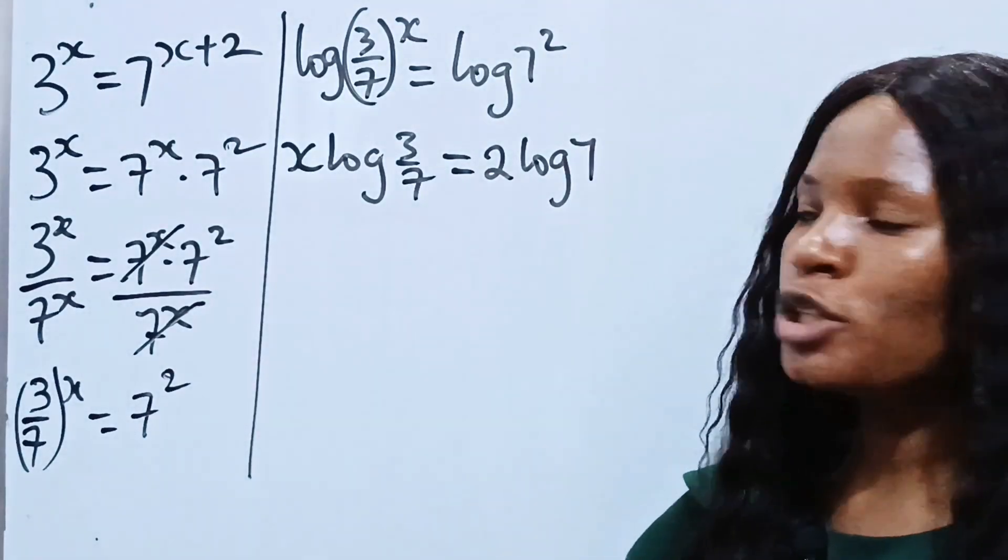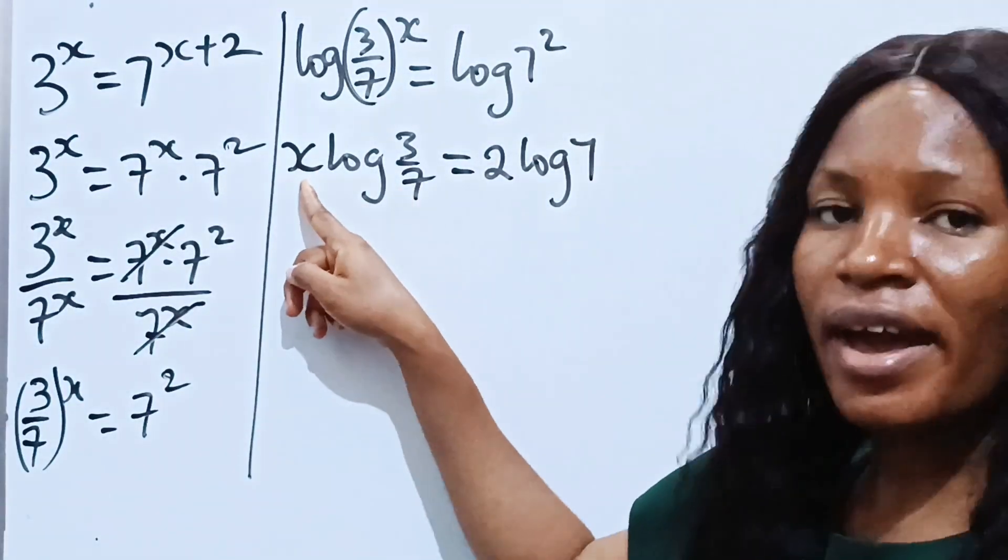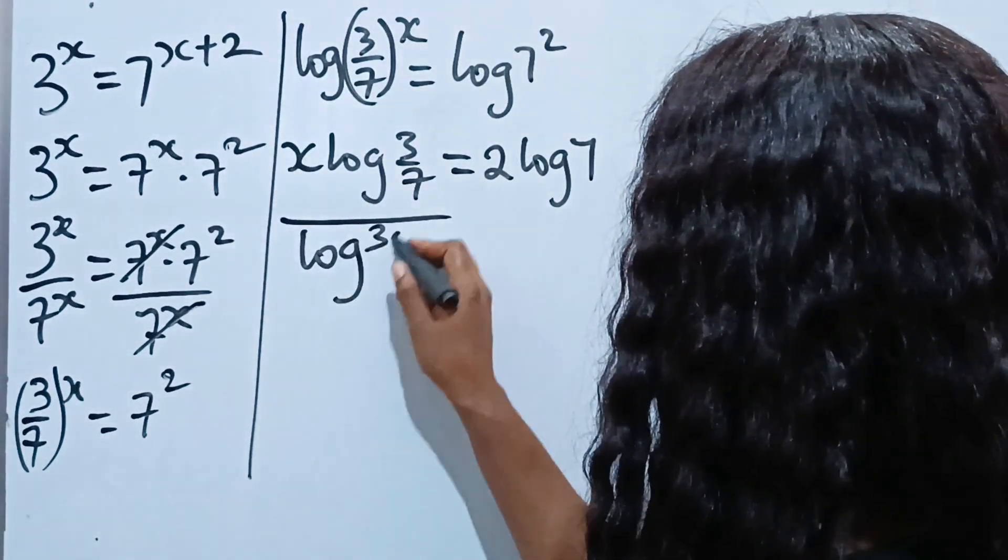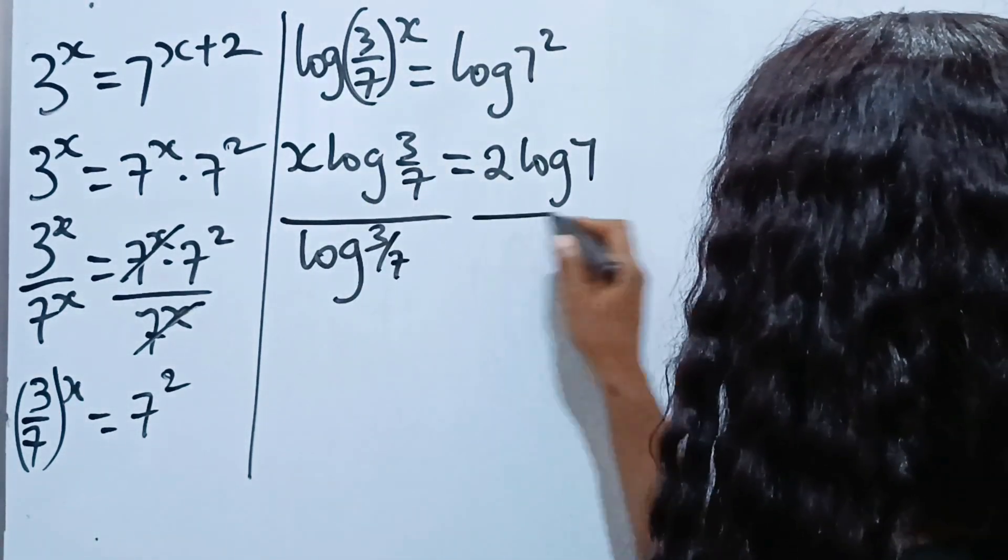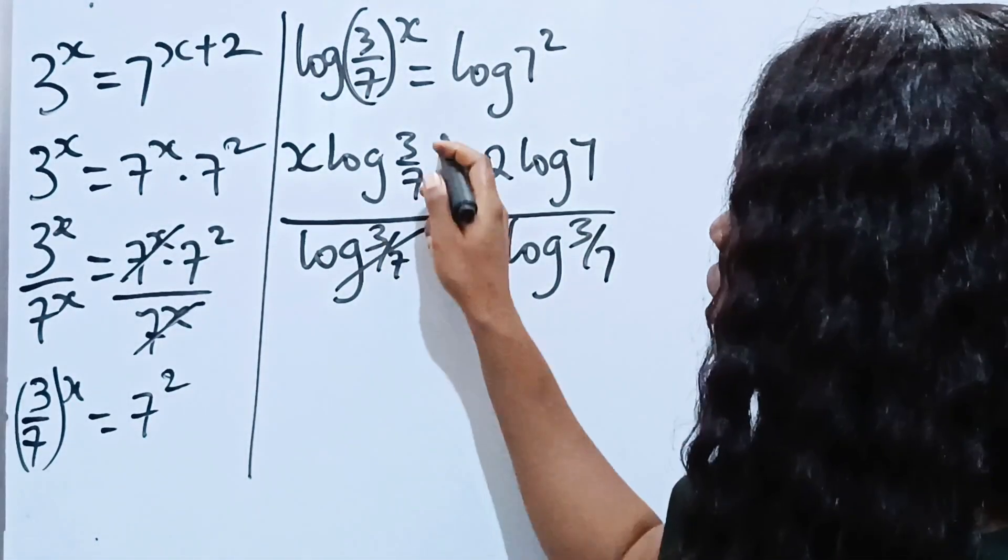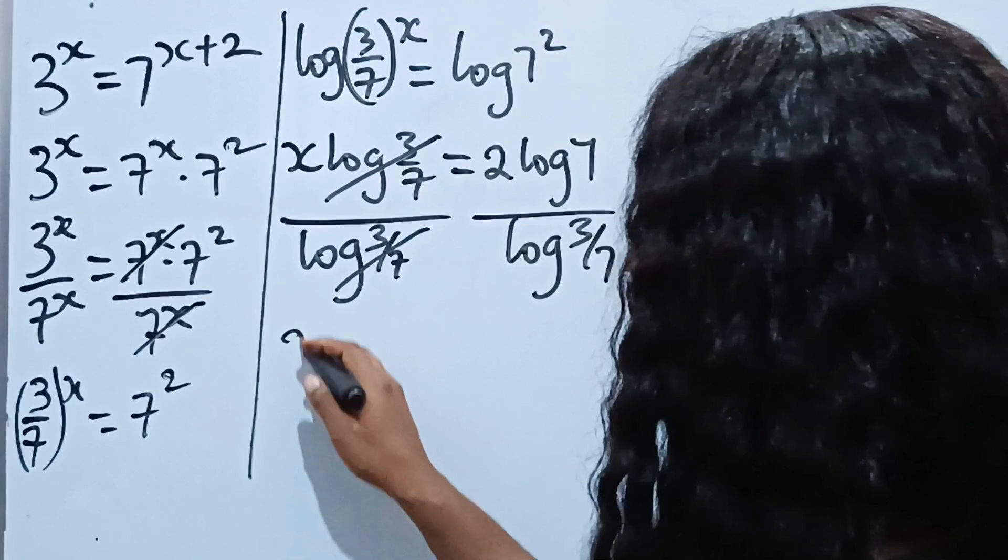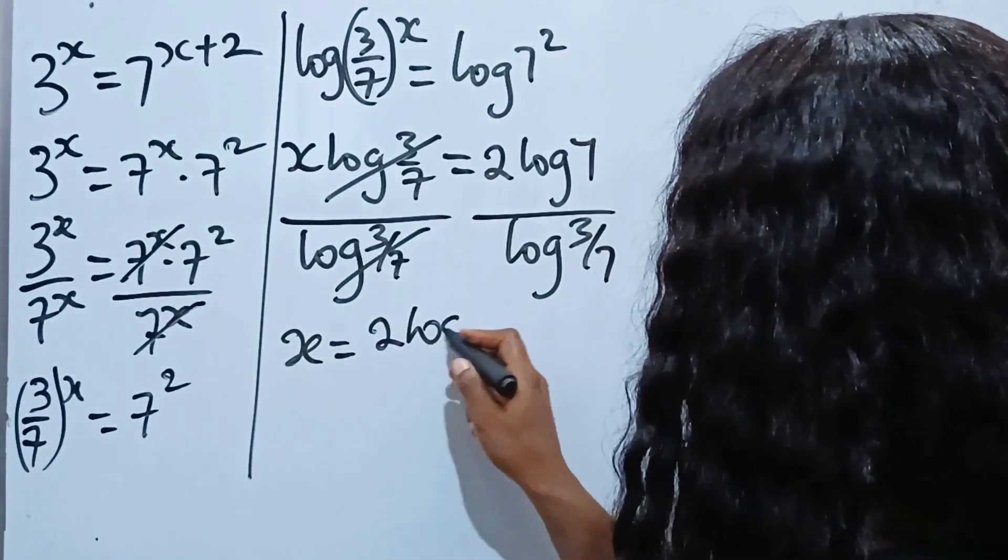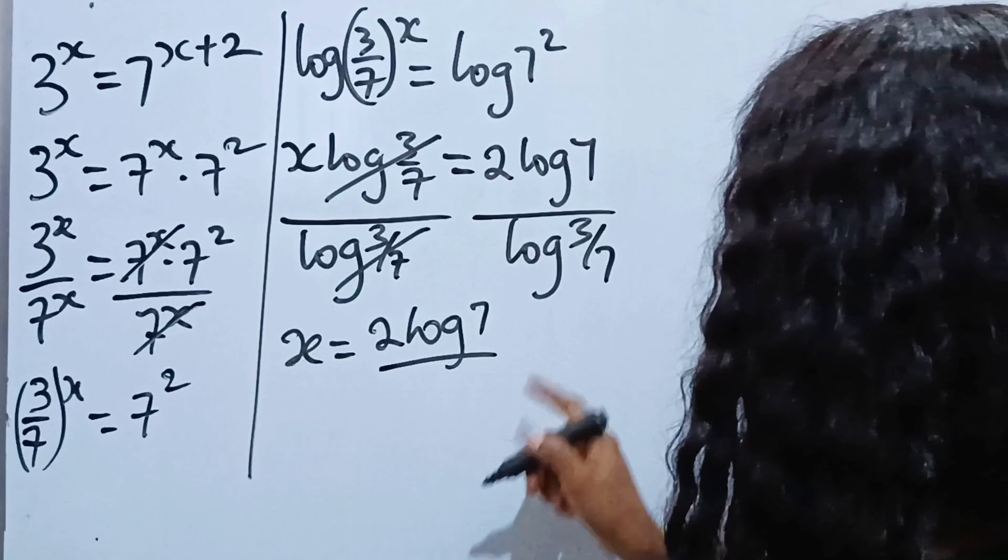Now we are going to divide through by this since we are looking for x. So divided by log 3 divided by 7, divided by log 3 divided by 7. So this is going to divide this and we have that x equals 2 log 7 divided by...